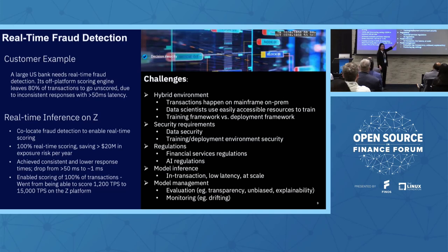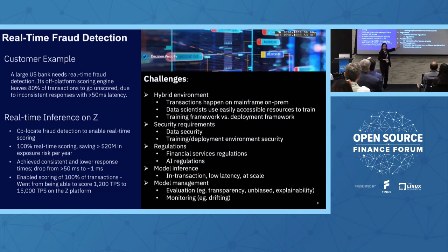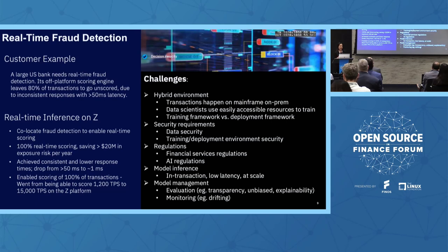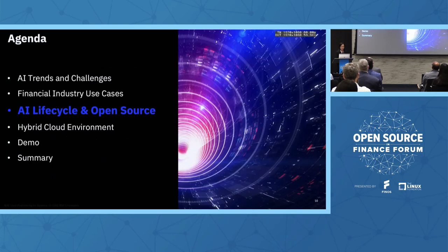Model inference matters too. Looking at different use cases, some have very low latency requirements. Some may allow batch inferencing, but some you cannot. Model management is also critical — that's the ecosystem I mentioned. You need a healthy, optimized ecosystem to help you through every stage of AI development. Even after you deploy, you need to monitor if the model drifts over time, retrain it, and redeploy. That's an iterative process.